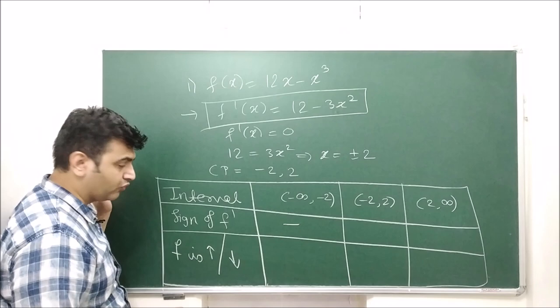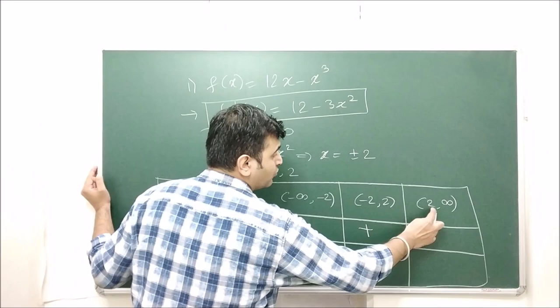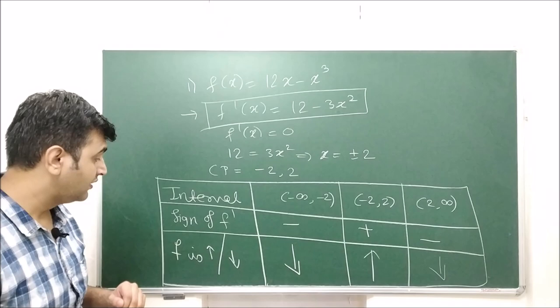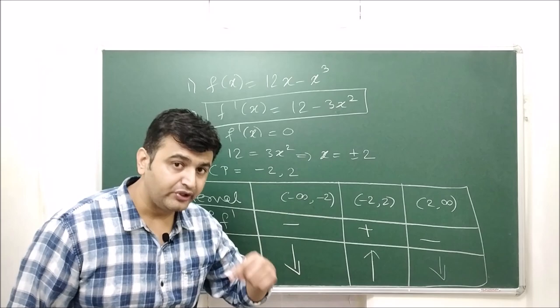For the interval minus 2 to 2, take x = 0: f′(0) = 12, which is positive, so the function is increasing. For the interval 2 to infinity, take x = 3: f′(3) is negative, so the function is decreasing. Therefore the function is increasing on the interval (−2, 2) and decreasing on (−∞, −2) ∪ (2, ∞).